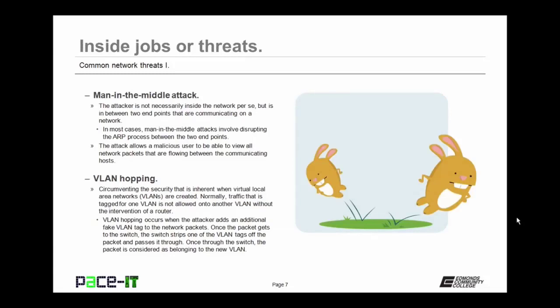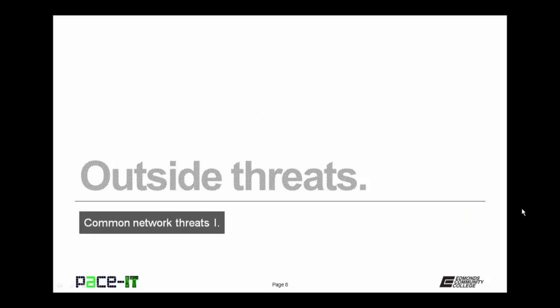Then there's VLAN hopping. This is circumventing the security that is inherent when virtual local area networks are created. Normally, traffic tagged for one VLAN is not allowed onto another VLAN without the intervention of a router. VLAN hopping occurs when the attacker adds an additional fake VLAN tag to the network packets. Once the packets get to the switch, the switch strips one of the VLAN tags off and passes it through. Once through the switch, the packet is considered as belonging to the new VLAN, thus bypassing the security that's inherent in VLANs.